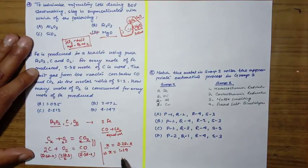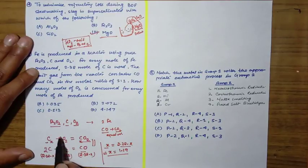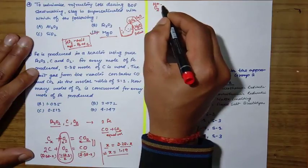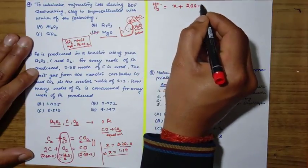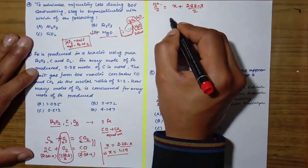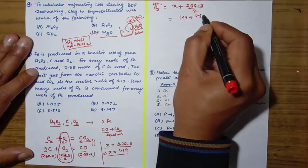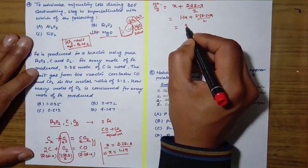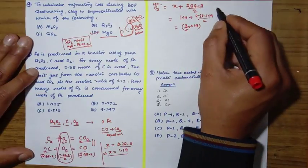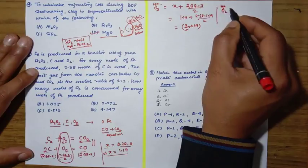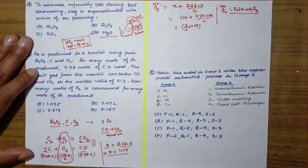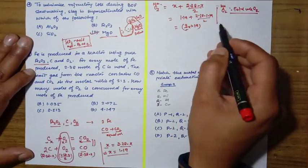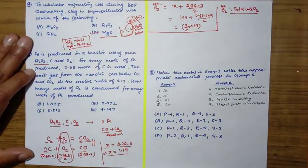The total amount of oxygen consumed is x plus (2.38-x)/2, which equals 1.19 plus (2.38-1.19)/2, that is (3/2) × 1.19. But this oxygen is the total mole which is consumed, and we're getting oxygen not only from here but also from Fe2O3, so we need to subtract the oxygen from Fe2O3.